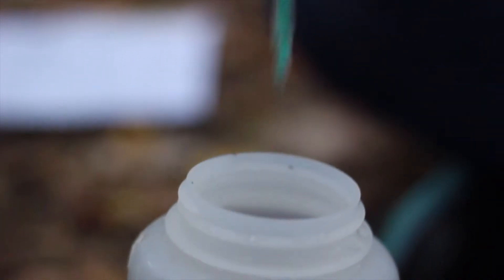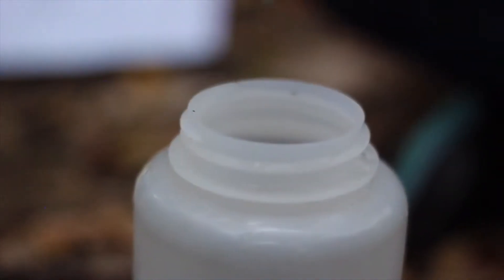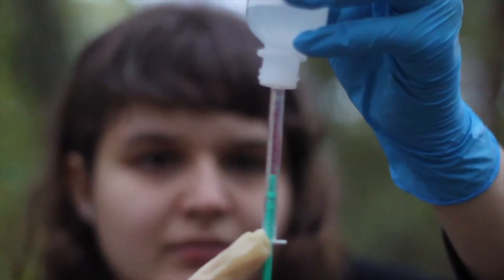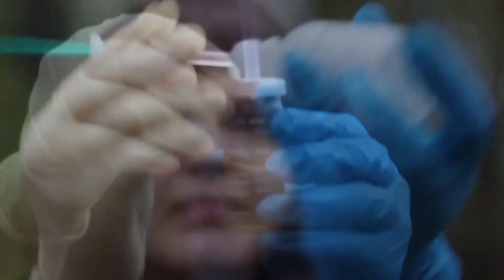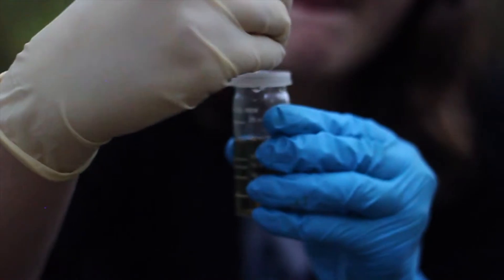Dispose of the leftover sodium thiosulfate into the waste container. And, once again, fill it up to the zero mark. Insert your titrator and titrate, adding one drop at a time and swirling after each drop until the color appears to be a straw color. Observe the color change.